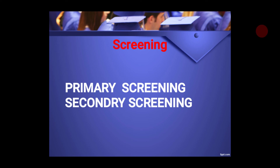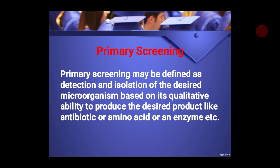Industrially, screening can be classified into two categories: primary screening and secondary screening. Primary screening is the initial step — the initial isolation process. In primary screening there is detection and isolation of the desired organism based on its qualitative ability to produce the desired product, such as antibiotics, amino acids, growth factors, or enzymes. These detection and isolation are the two important aspects covered in primary screening.